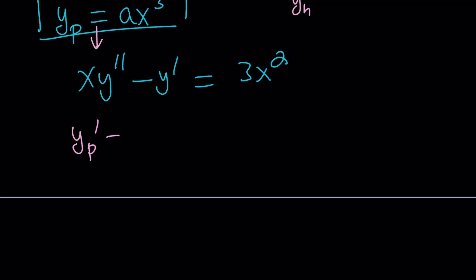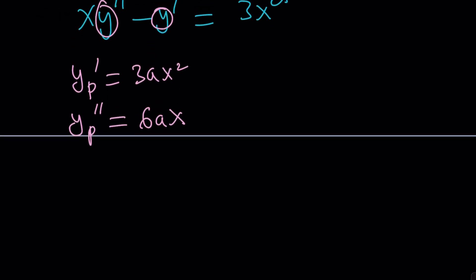Differentiate y particular once. You're going to get 3ax squared. Differentiate that twice. One more time, 6ax. Let's go ahead and plug it in here and here. That's going to give me x times y double prime, which is 6ax minus 3ax squared equals 3x squared.